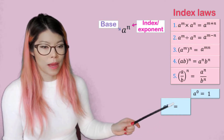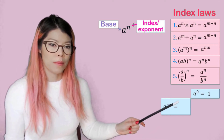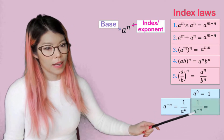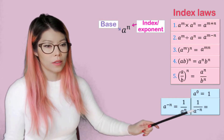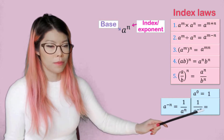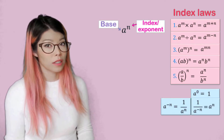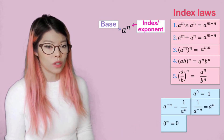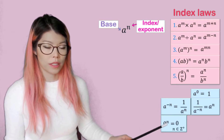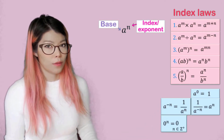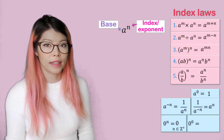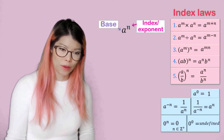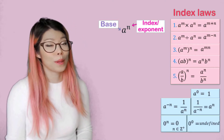A to the negative n can be made with a positive power by bringing it down, so it becomes one over a to the positive n. Similarly, a to the negative n as a denominator can be brought up to become a to the positive n. We also notice that zero to the n is usually zero for all positive integers. But if we have zero to the zero, then it is undefined. So these are the rules we're going to use today — you should be familiar with them. If not, you better memorize them now.